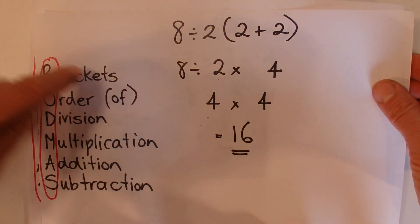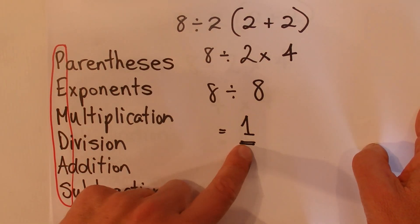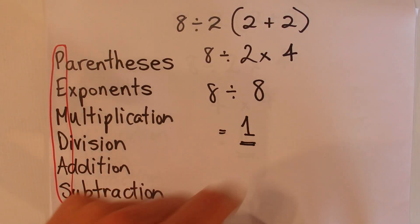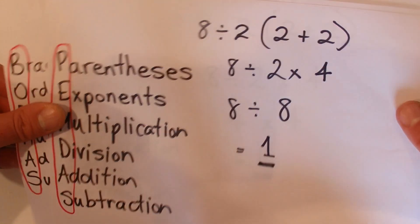Okay, so I believe that the answer is actually 16 based on BODMAS, but there is also a case for the answer to be 1. That's if you do the multiplication before the division.